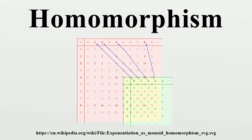If we are considering multiple operations on a set, then all operations must be preserved for a function to be considered a homomorphism. Even though the set may be the same, the same function might be a group homomorphism but not a ring isomorphism, because it may fail to preserve the additional monoid structure required by the definition of a ring.